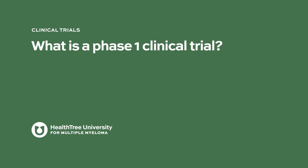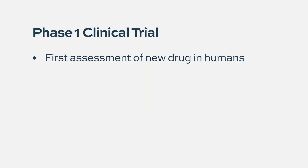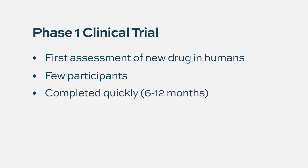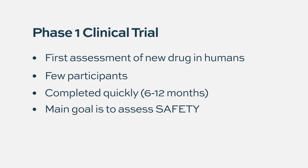What is a phase one clinical trial? A phase one clinical trial is really the first assessment of a new drug in humans. Phase one trials generally include a smaller number of patients, generally 15 to 25, and are done in a brief period of time, usually between 6 and 12 months.